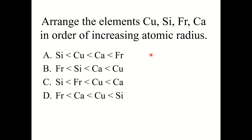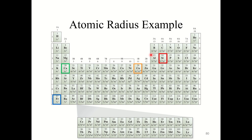Let's try a knowledge check question. Arrange the elements copper, silicon, francium, and calcium in order of increasing atomic radius. The correct answer is A: silicon is the smallest, followed by copper, then calcium, then francium.